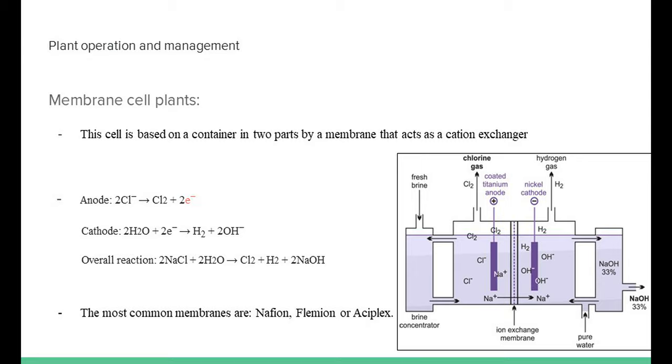In the past, mercury and diaphragm cells have been very popular. However, they have been proven to be the most environmentally unfriendly because of the use of asbestos and mercury. The membrane cell process is a superior method in its energy efficiency and lack of harmful chemicals. This kind of cell is based on a container that is divided in two parts by a membrane, as we can see in the photograph on the right. This membrane is the most important part of the cell and acts as a cation exchanger.